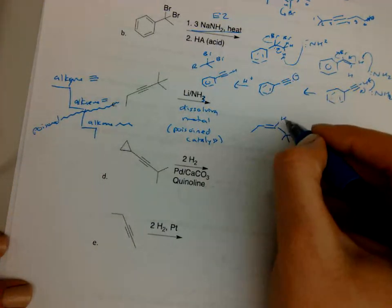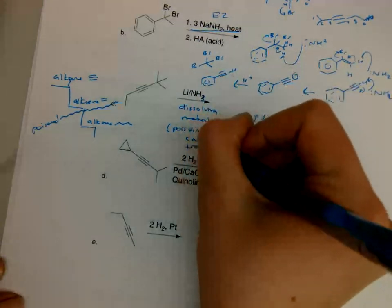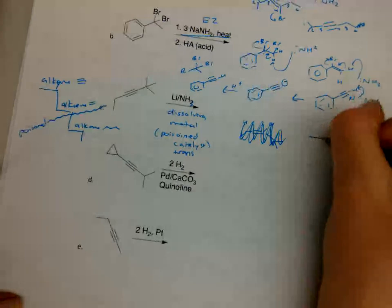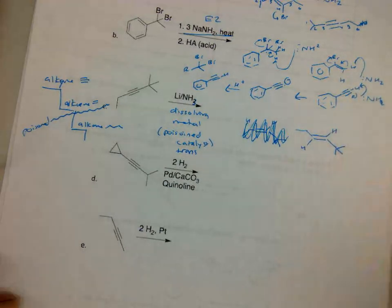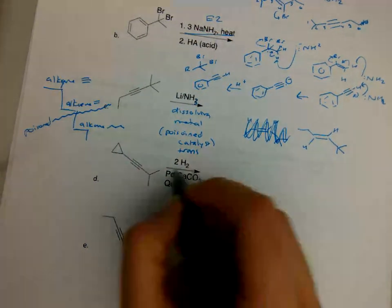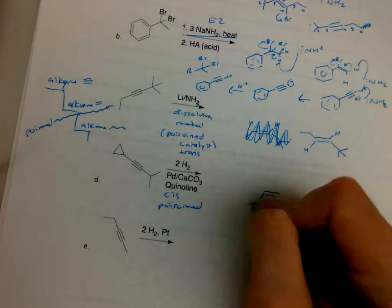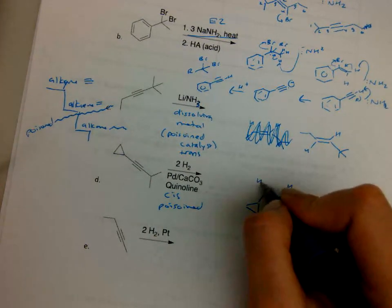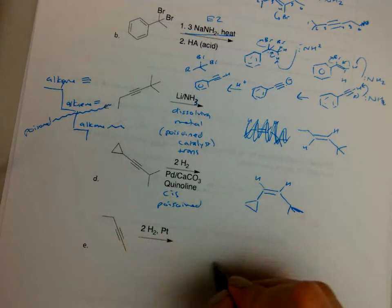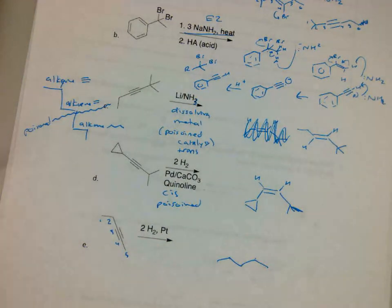So to be clear: dissolving metal reduction gives you trans — the two hydrogens are on opposite sides and the two substituents are also opposite. Lindlar's catalyst gives you cis — the two groups are on the same side. And a regular hydrogenation without a poisoned catalyst goes all the way to the alkane, for example giving you pentane.